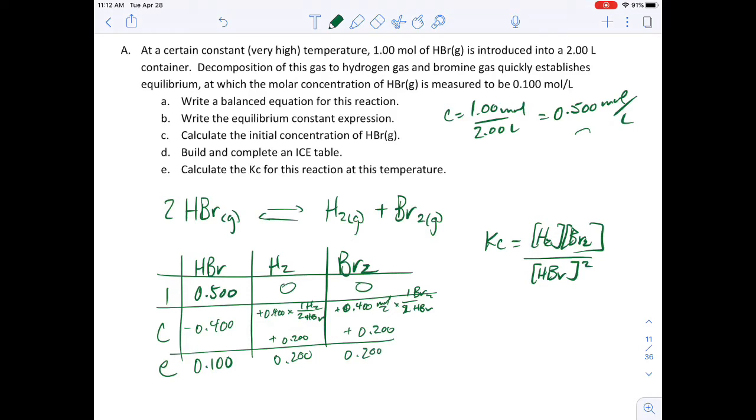This asked me to write a balanced equation for this reaction—done that. Write the equilibrium constant expression, and that's here where I've got each of these products being raised to the power of one and hydrogen bromide being squared.